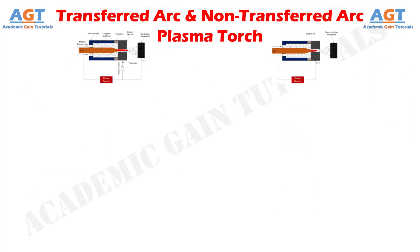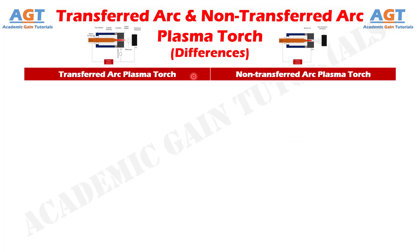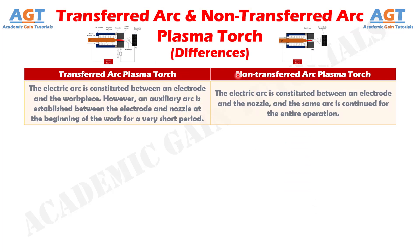Let's look into the basic differences between transferred arc and non-transferred arc plasma torches in a tabular form. Difference number one: in a transferred arc plasma torch, the electric arc is constituted between an electrode and the workpiece. However, an auxiliary arc is established between the electrode and nozzle at the beginning of the work for a very short period. Whereas, in a non-transferred arc plasma torch, the electric arc is constituted between an electrode and the nozzle, and the same arc is continued for the entire operation.